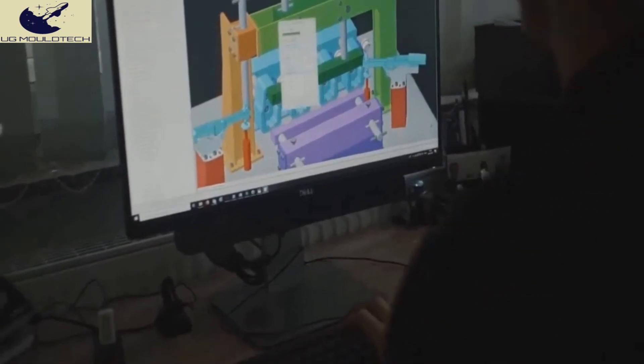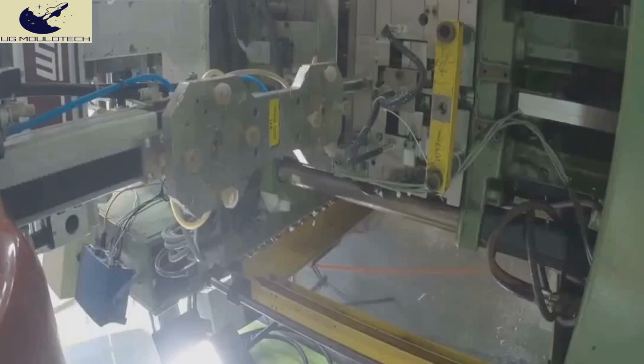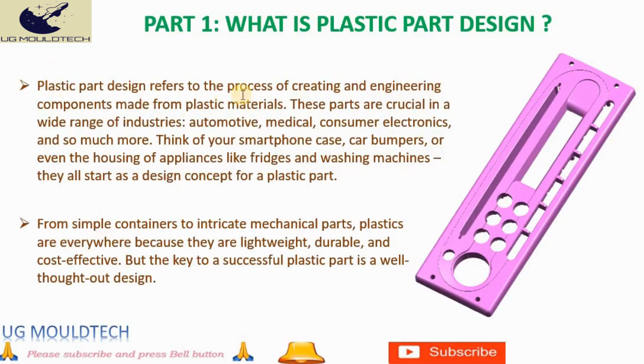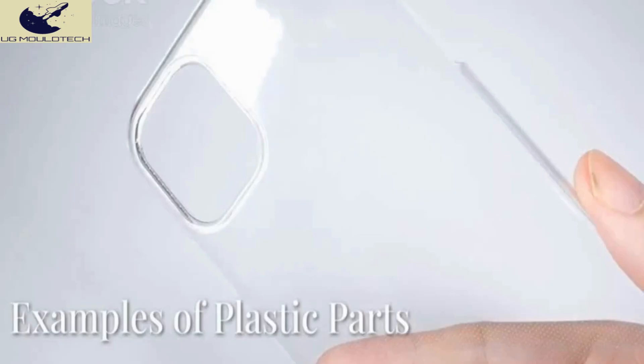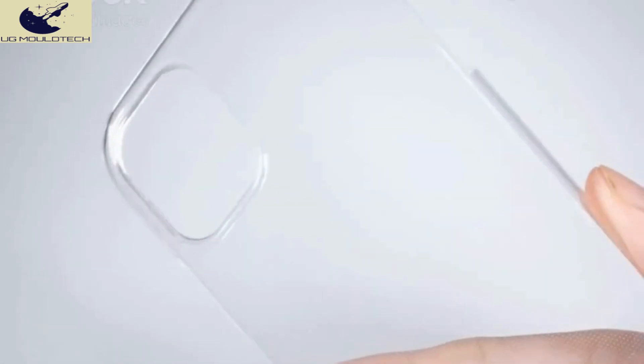Plastic part design refers to the process of creating and engineering components made from plastic materials. These parts are crucial in a wide range of industries: automotive, medical, consumer electronics, and so much more. Think of your smartphone case, car bumpers, or even the housing of appliances like fridges and washing machines. They all start as a design concept for a plastic part.